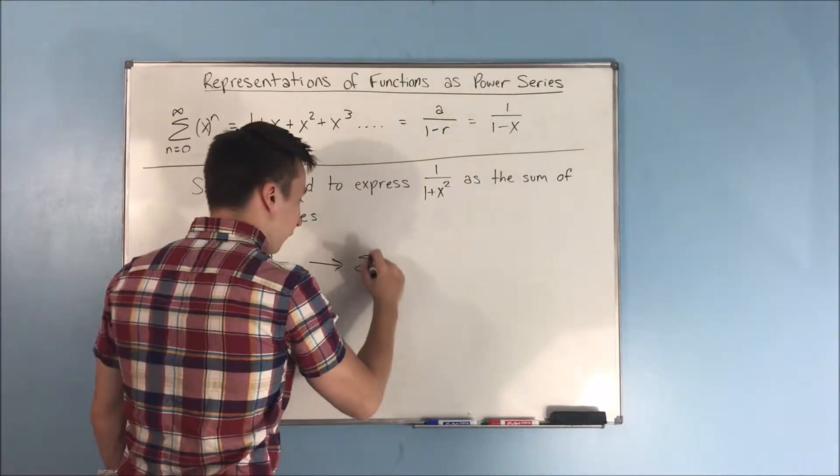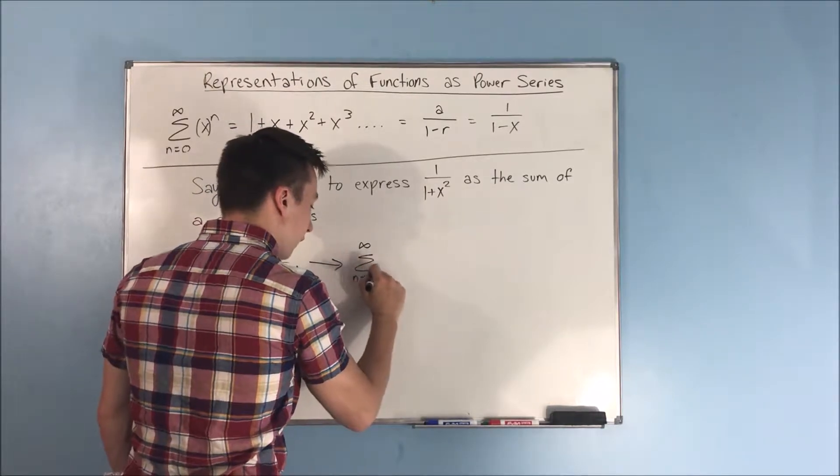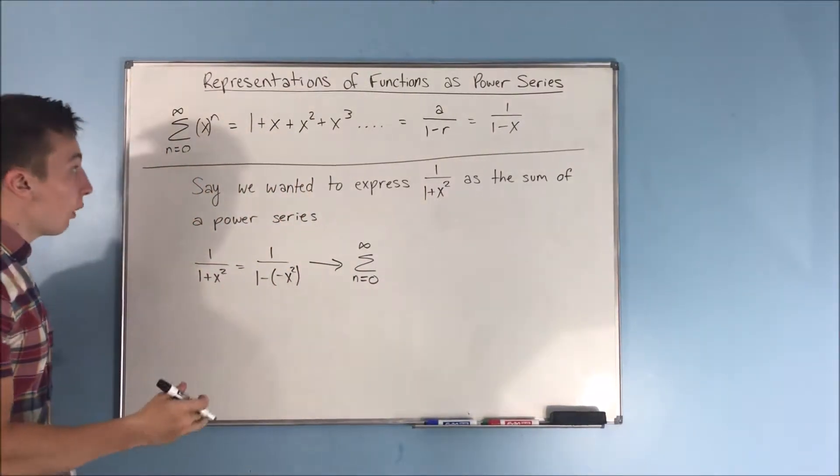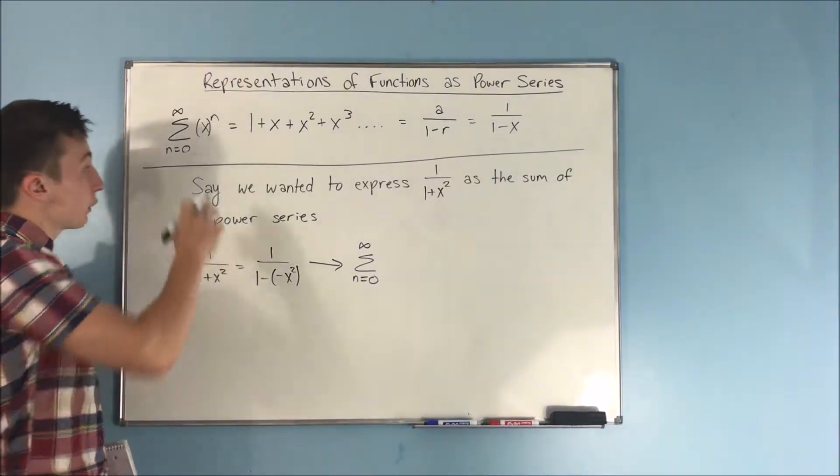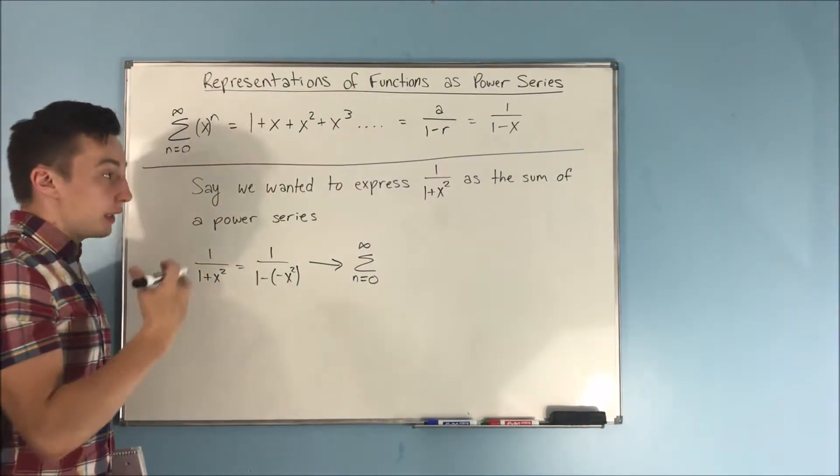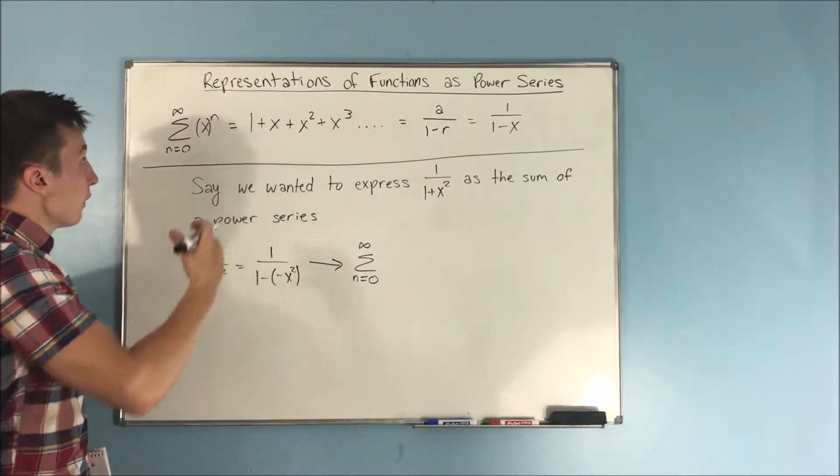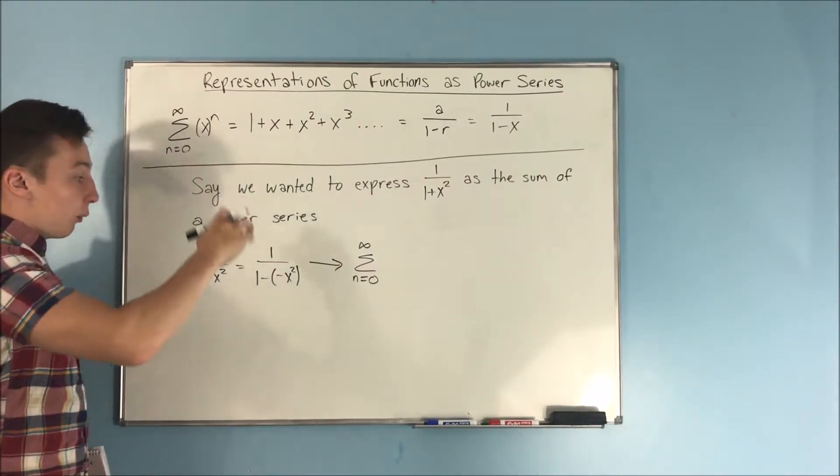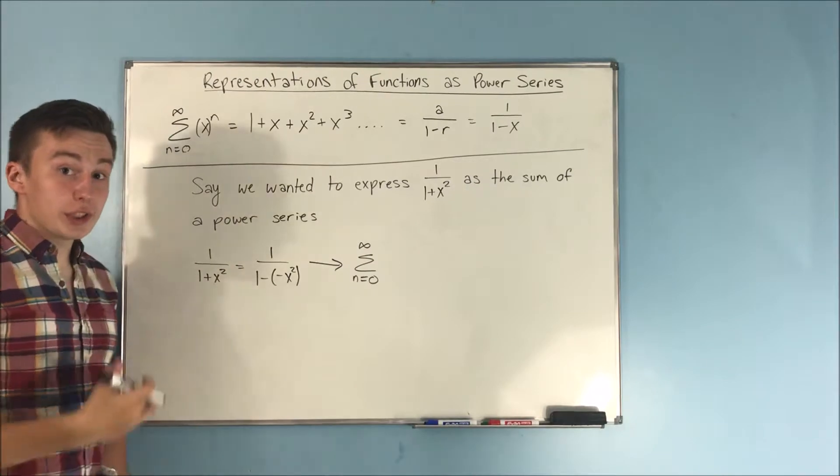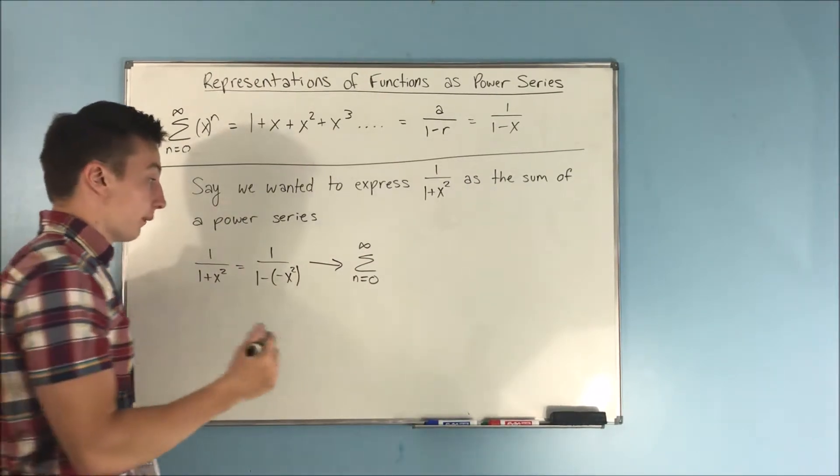The sum from n equals 0 to infinity of, well, instead of having an x to the n, because our x was our common ratio, right? That's the form for a geometric series. Well, instead of having that x there, we're going to have our new common ratio, which is negative x squared. Negative x squared. And that will be raised to the nth power.